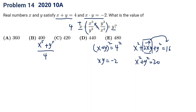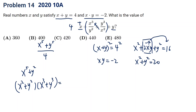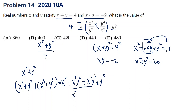For x⁵ plus y⁵, we can use (x squared plus y squared) times (x cubed plus y cubed). If we expand, it becomes x⁵ plus x³y² plus x²y³ plus y⁵. The middle terms factor as x²y² times (x plus y), which equals 4 times 4 equals 16. So x⁵ plus y⁵ equals this whole product minus 16.